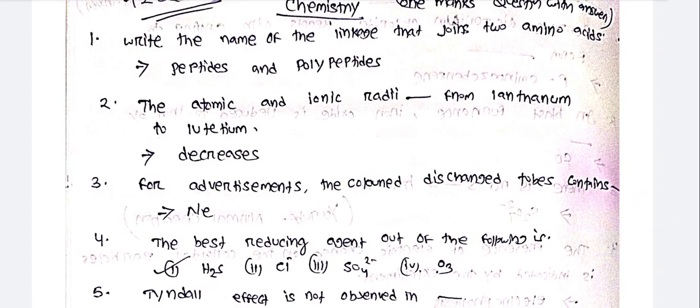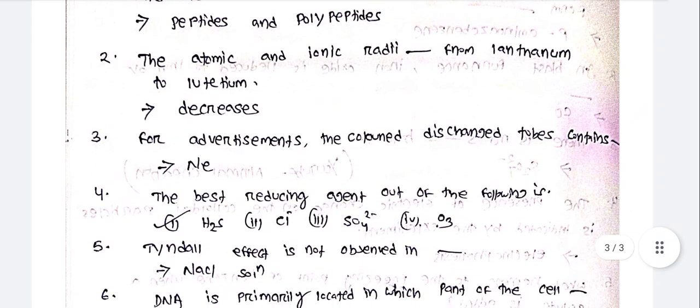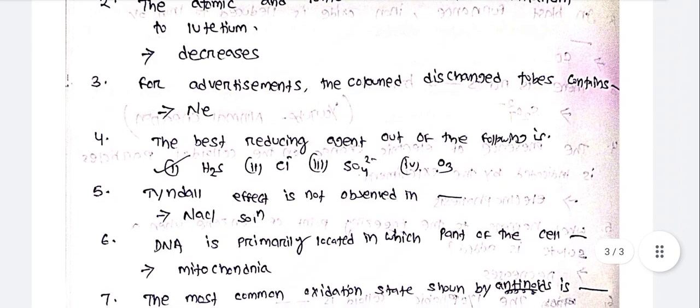Write the name of the linkage that joins two amino acids. The atomic and ionic radii from lithium to lithium. For advertisements, the color discharge tube contains dash.